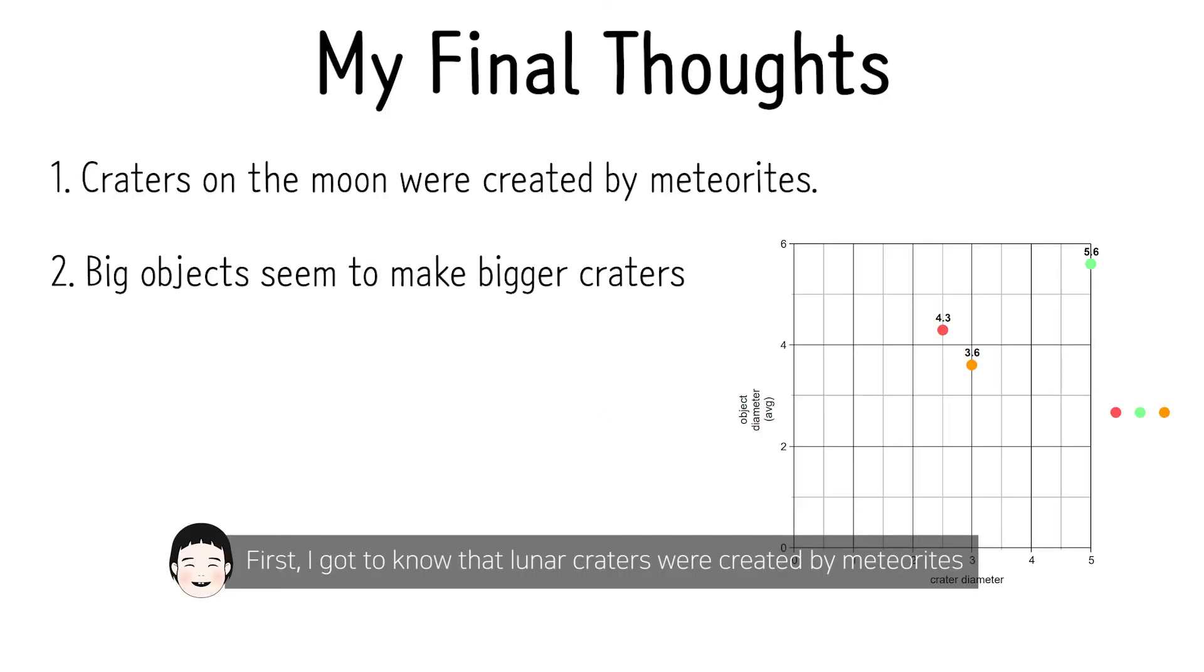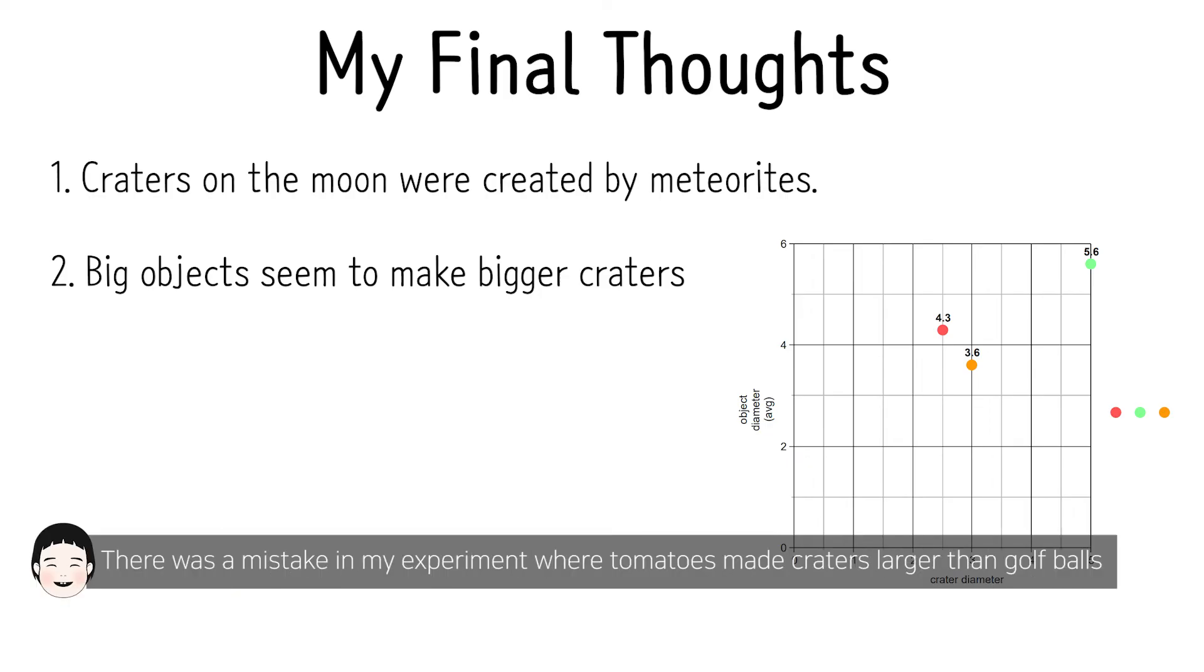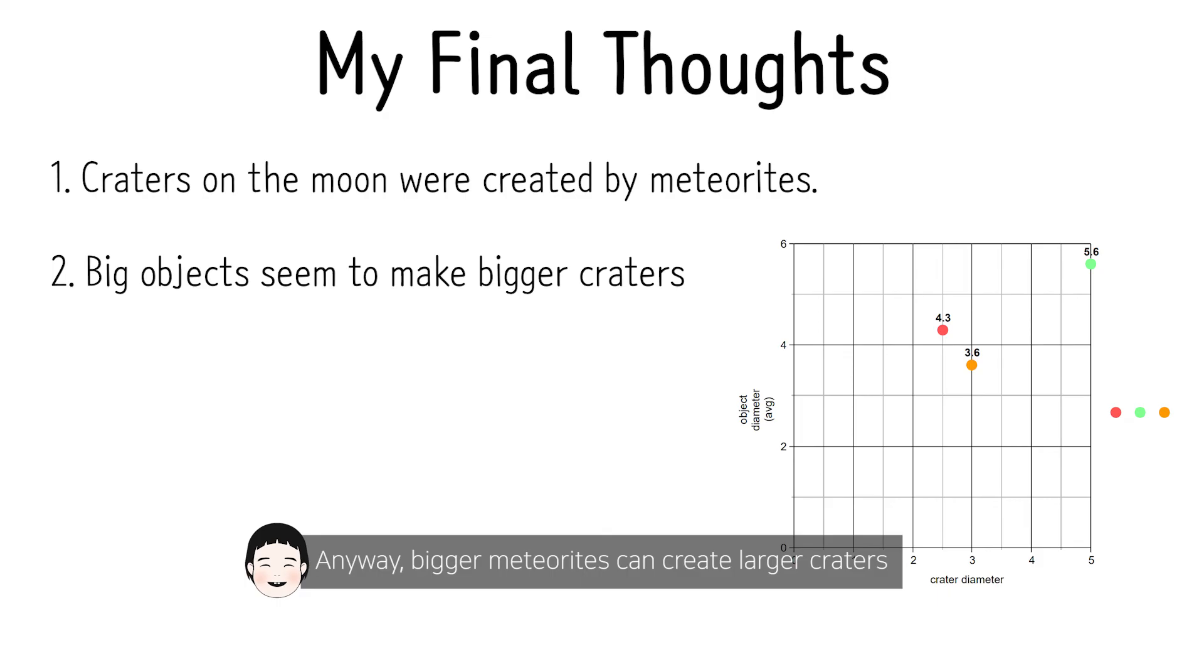First, I got to know that lunar craters were created by meteorite impacts. There was a mistake in my experiments where the tomato made the crater larger than the golf ball. Anyway, a bigger meteorite can create a larger crater.